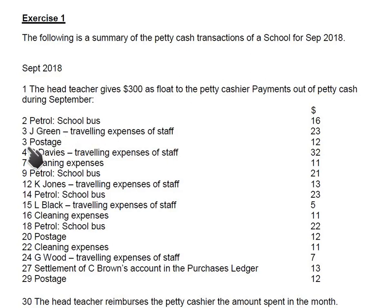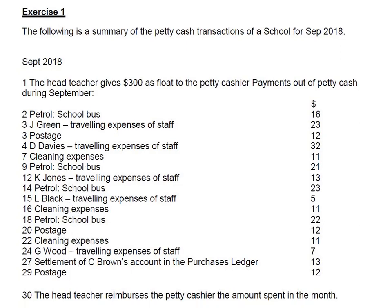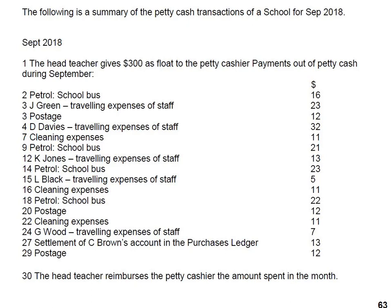These are the transactions for this month. On the 2nd we fueled petrol in the school bus for $16, then we paid J Green's traveling expenses, then there is a postage expense, and we paid D Davis's traveling expense. There are also cleaning expenses, and then petrol again, among other transactions. At the end of the month, the head teacher reimburses the petty cashier the amount spent in the month.